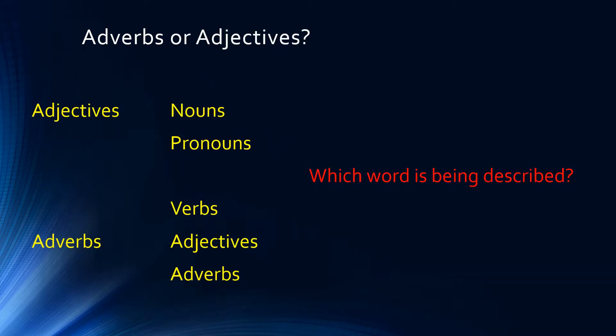When comparing adverbs and adjectives, remember: adjectives modify nouns and pronouns, while adverbs modify verbs, adjectives, and adverbs. To determine if a word is an adjective or an adverb, we have to ask: which word in the sentence is being described? When we identify the word being described, we can determine whether it's an adjective or an adverb.